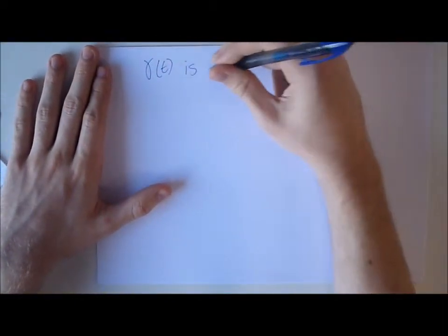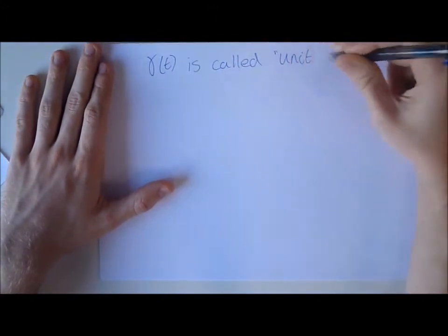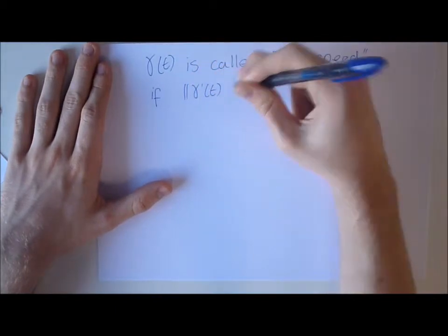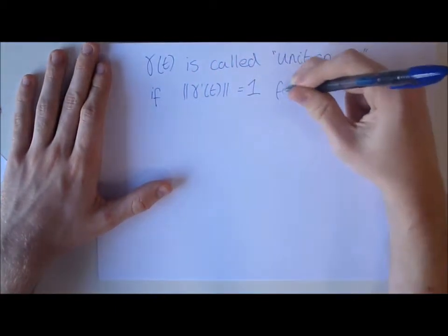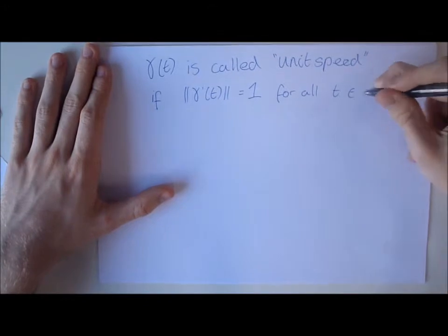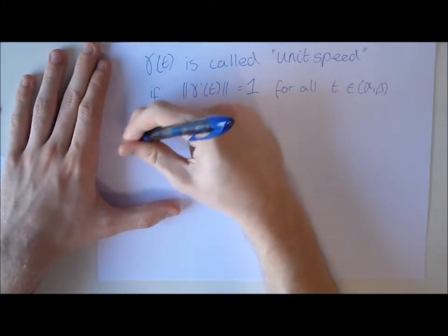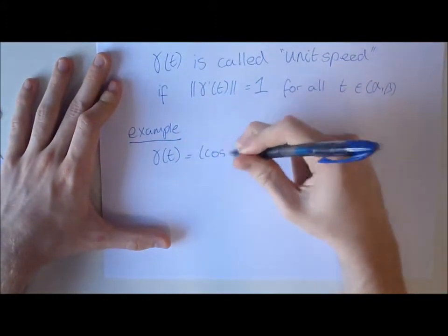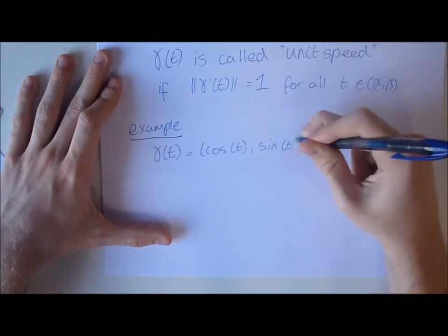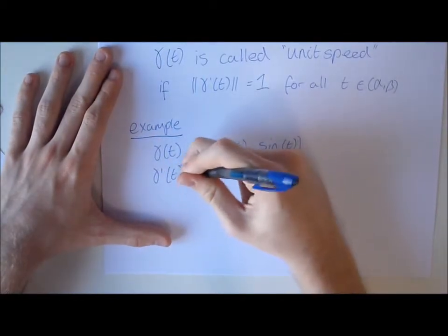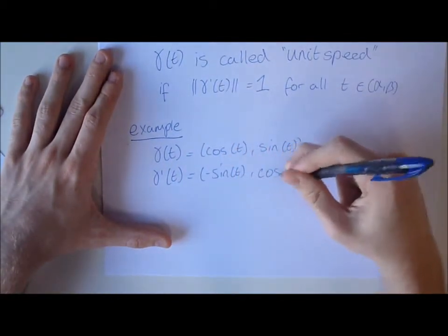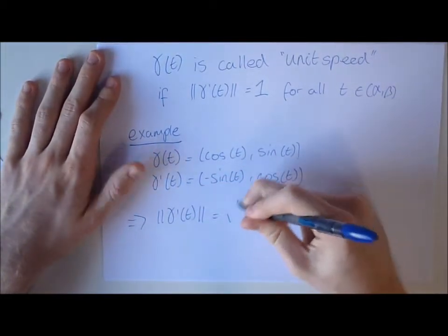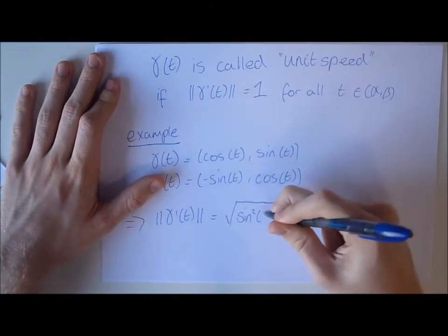Gamma is called unit speed if and only if the length of gamma prime is 1, for all t in the interval (alpha, beta). For example, if gamma = (cos t, sin t), the differential of this is (-sin t, cos t), the length of which is the square root of sin^2 t + cos^2 t, and we all know that's 1. This is for all t which is an element of R.